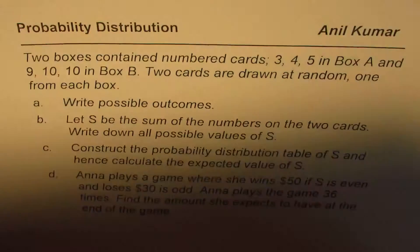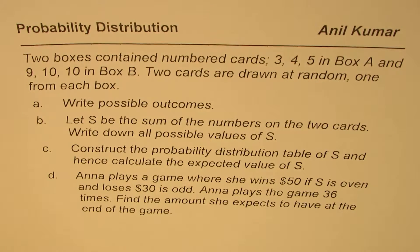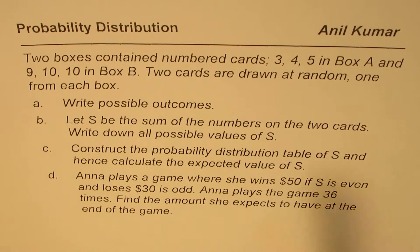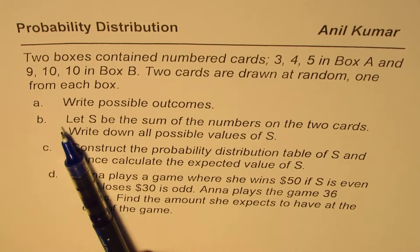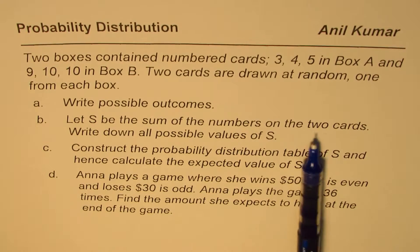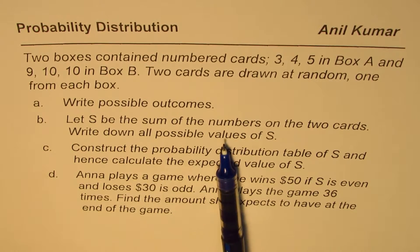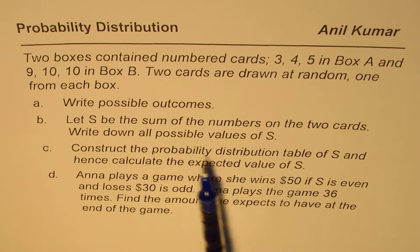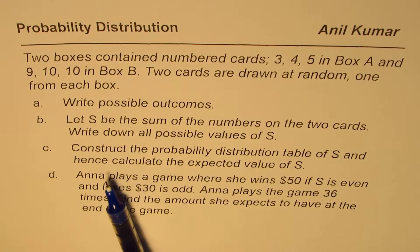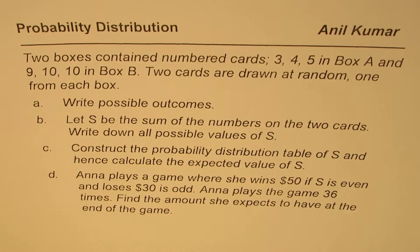The question has four different parts. Two boxes contain number cards: 3, 4, 5 in box A and 9, 10, 10 in box B. Two cards are drawn at random, one from each box. Write possible outcomes (part A). Let S be the sum of numbers on the two cards — write down all possible values of S, construct the probability distribution table of S, and hence calculate the expected value of S.